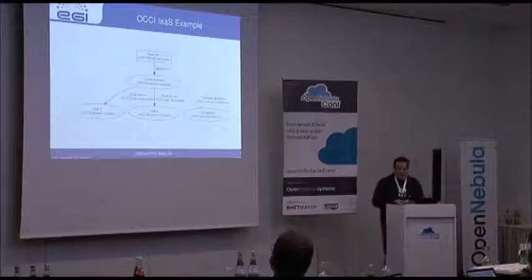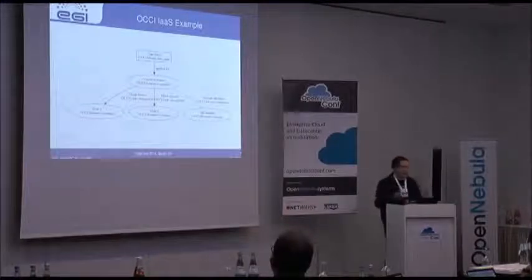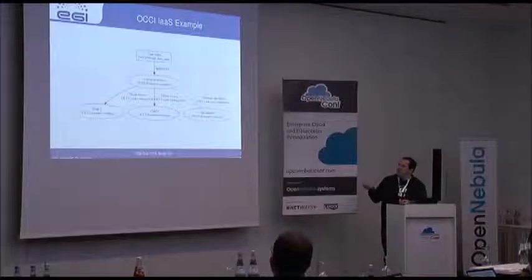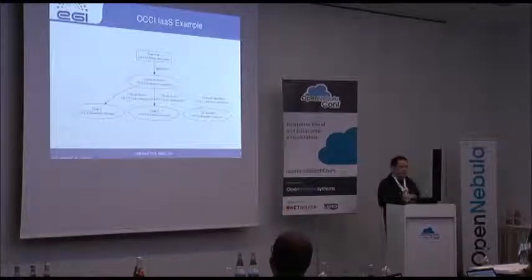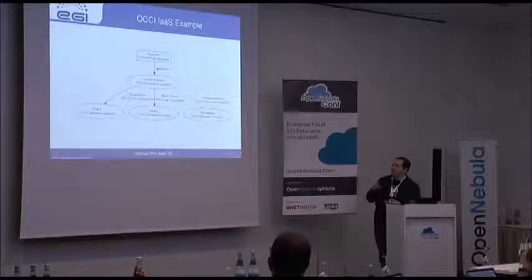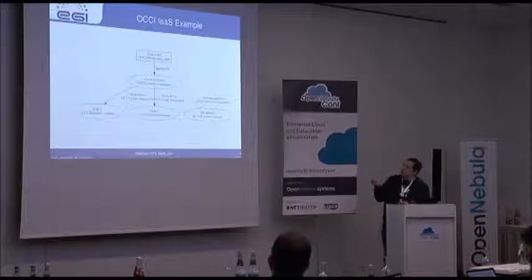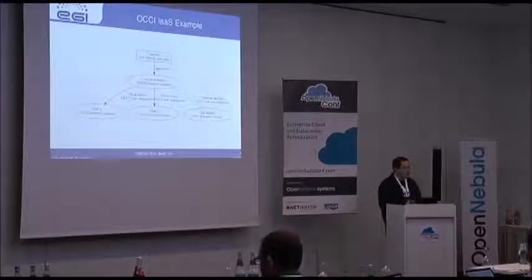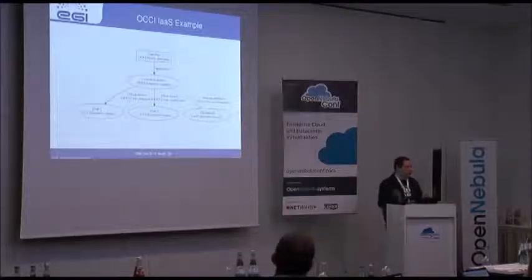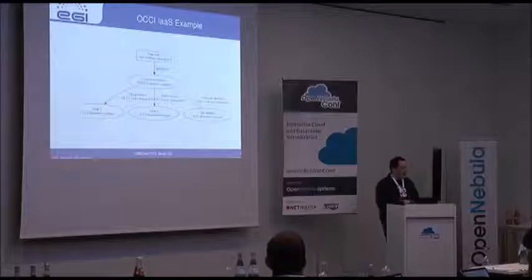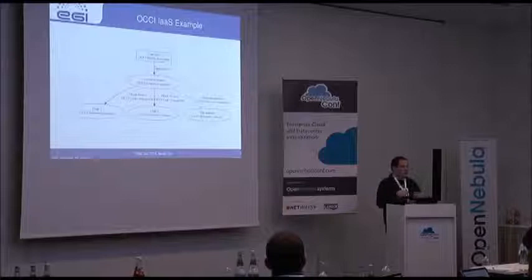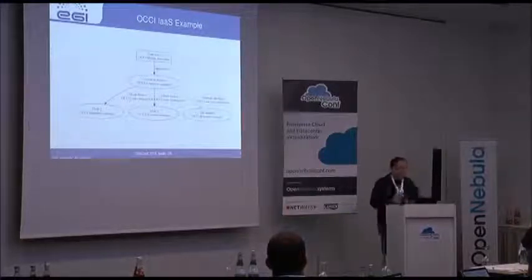To give you a better idea of how OCCI works: here is the compute resource, which is the actual virtual machine running in OpenNebula. Then you have storage resources — disks in OpenNebula — and a network resource which connects a virtual machine to the network. OCCI links of various types represent the relationship between compute and storage or network resources. There is also a concept called OCCI mixins, which are used to extend resources. For example, if you have a virtual machine that supports contextualization, you can add the OCCI mixin at runtime, which introduces contextualization support so you can provide the machine with user data and change it as it boots up.